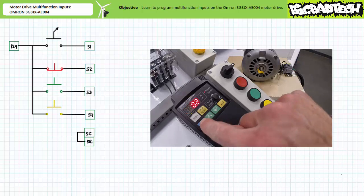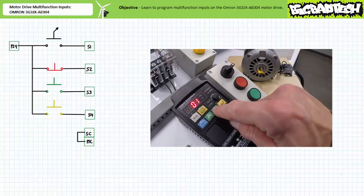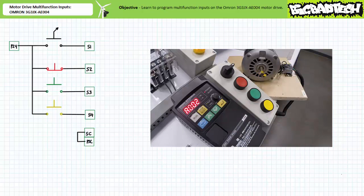As anticipated, it's in the default state of 02 — direct operation via the run and stop/reset button in the digital operator group. Decrement to 01, the multifunction digital input terminal, then select enter to save it. As soon as we press enter, something bad happens — namely, the motor starts spinning in reverse.